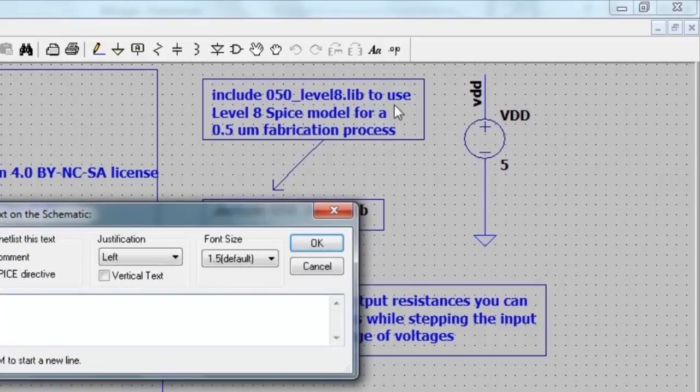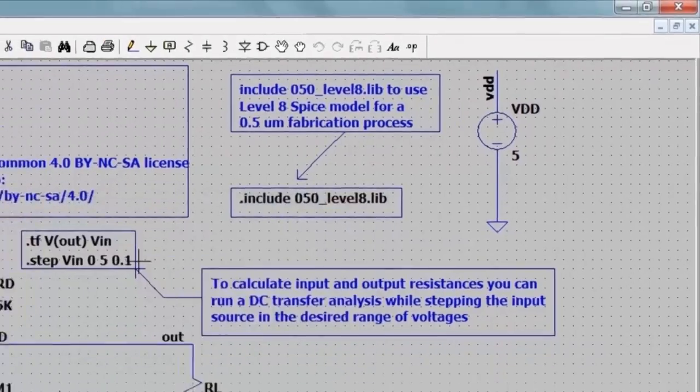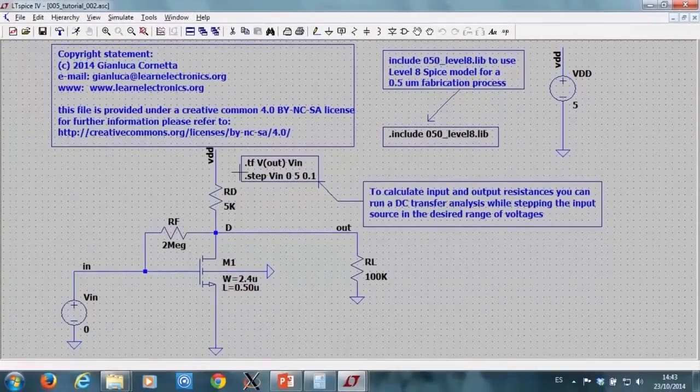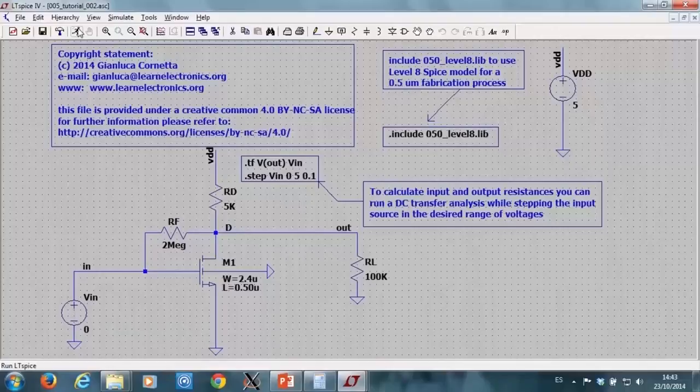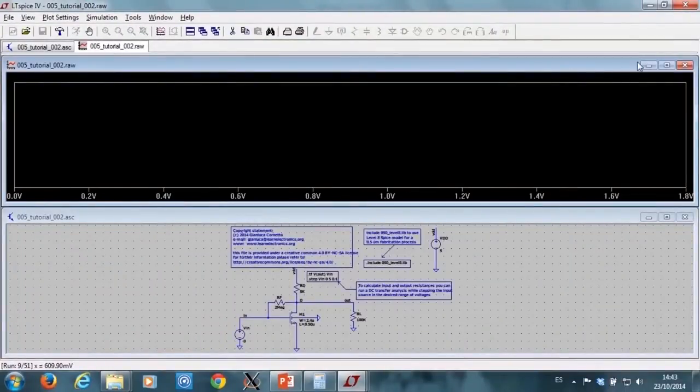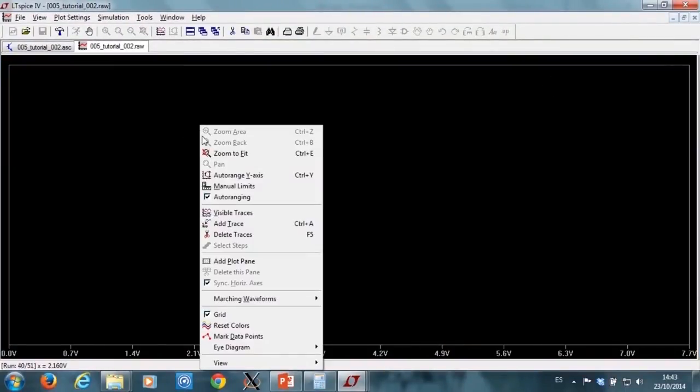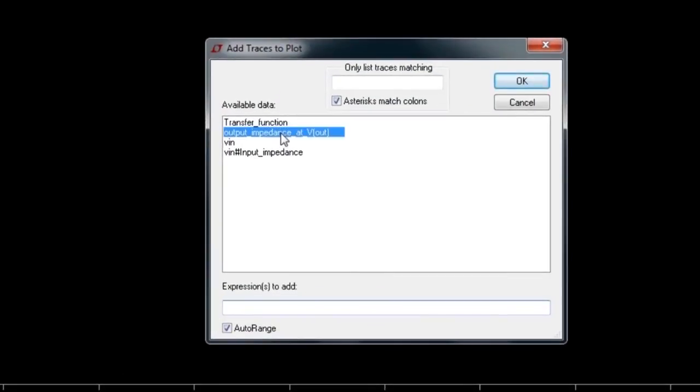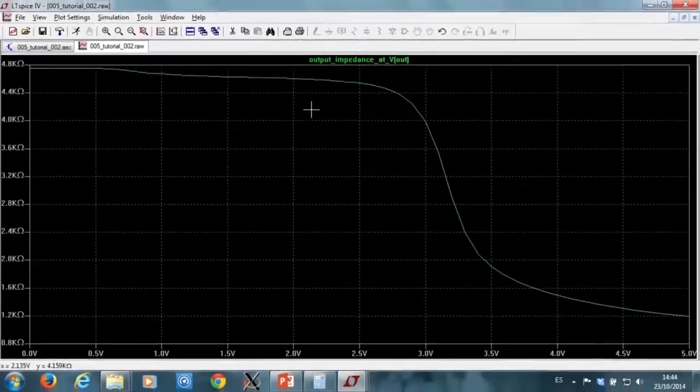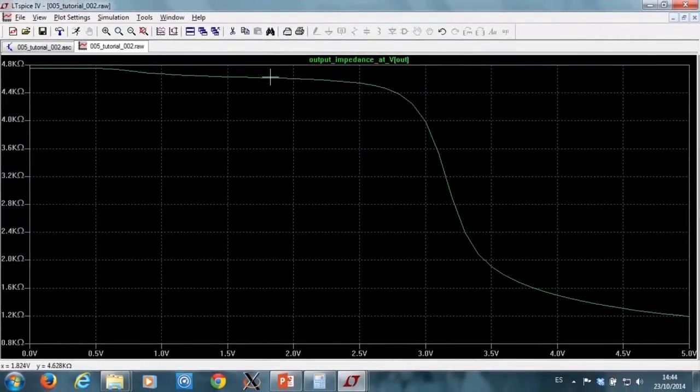By using the dot OP command, I specify the stepping of the source voltage VIN. I run the simulation, and I want to plot, for example, my output resistance first. I have this curve that is function of the input voltage.